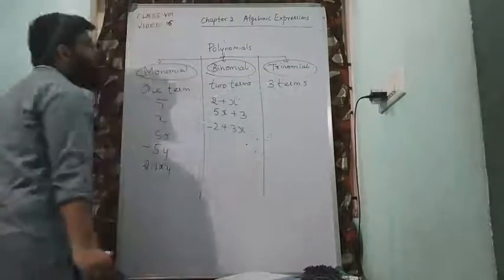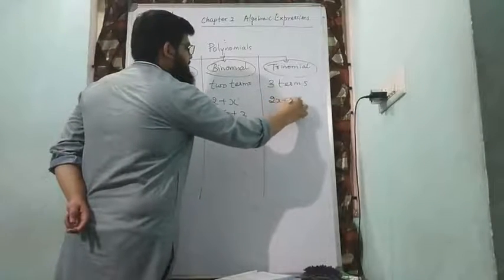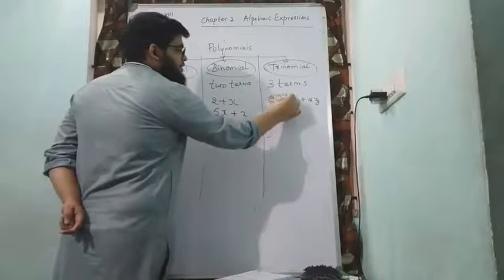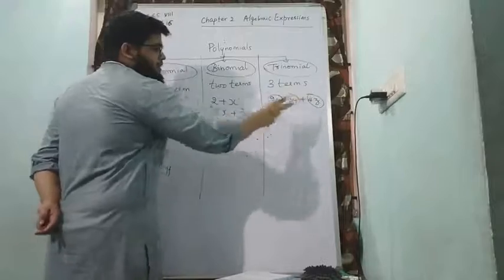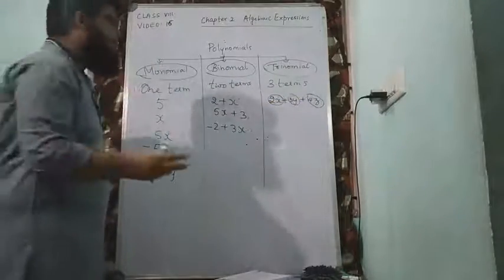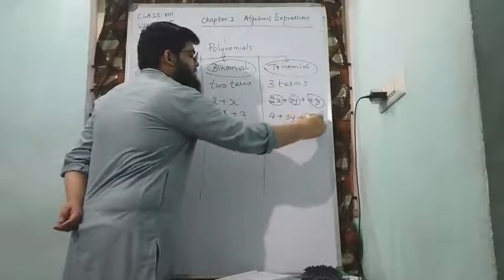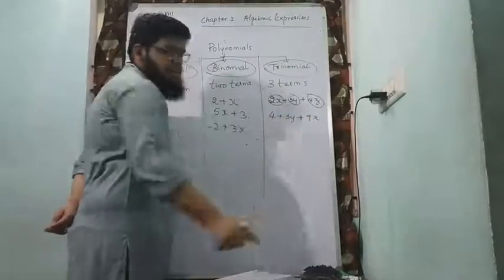Next we will have trinomials. Trinomials will have three terms. Example: 2x plus 3y plus 4z. 2x can be treated as one term, 3y one more term, 4z one more term. 1 plus 1 plus 1, three terms. Or 4 plus 3y plus 9x. 4 is one term, 3y is another term, 9x is another term.